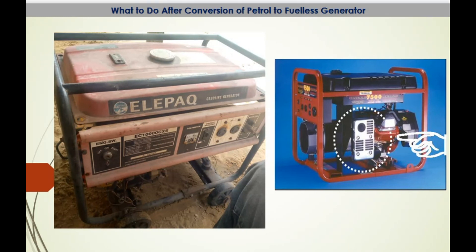To do the conversion, there are a lot of things involved. First of all, you must separate the mechanical sector of the generator. The mechanical sector is the area where we have the piston, the oil, the rod, and other mechanical functions. The electrical aspect is the area where the main work is needed. For the free energy conversion, you must separate the system and remove the mechanical sector completely.